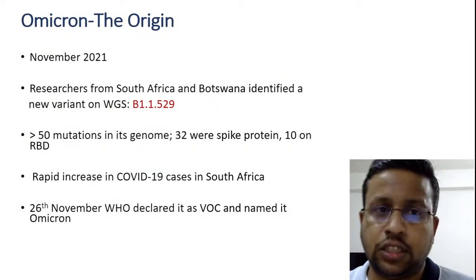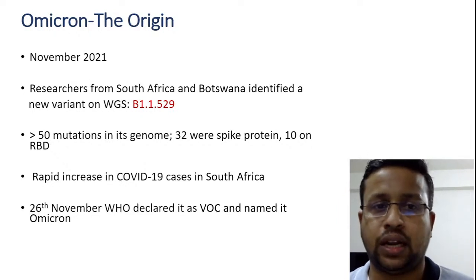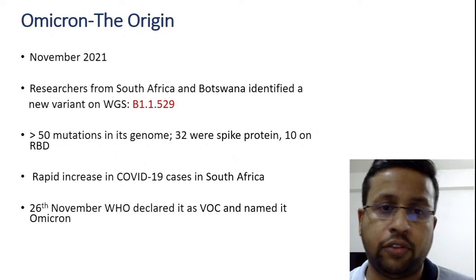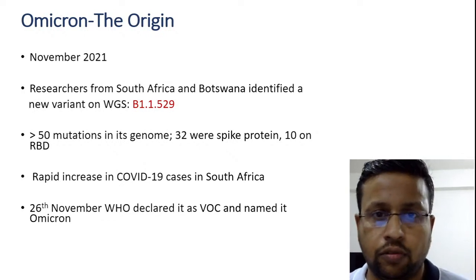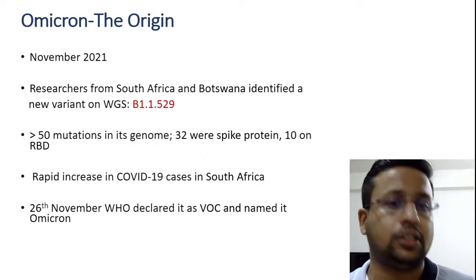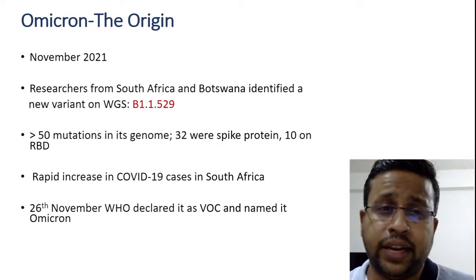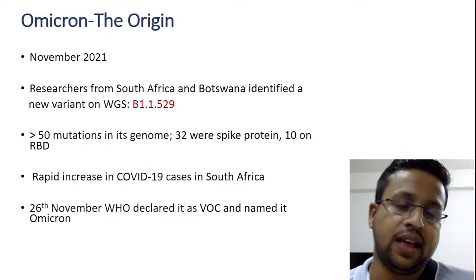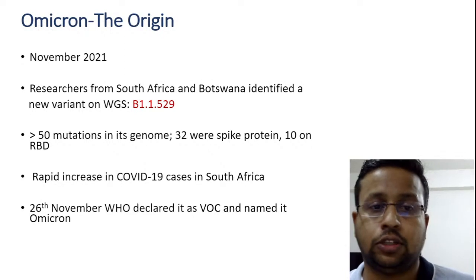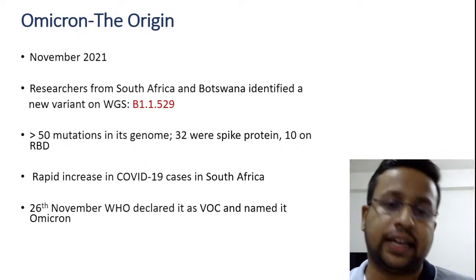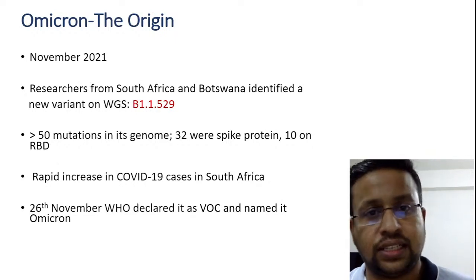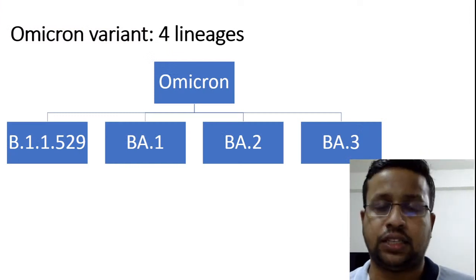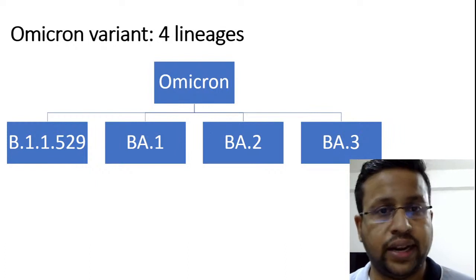In November 2021, researchers from South Africa and Botswana identified a new variant on whole genome sequencing — B.1.1.529 — which had more than 50 mutations in the genome, with 32 in the spike protein and 10 on the receptor binding domain. There was a rapid increase in COVID-19 cases in South Africa, and on 26 November 2021 the WHO declared B.1.1.529 a variant of concern and named it Omicron.